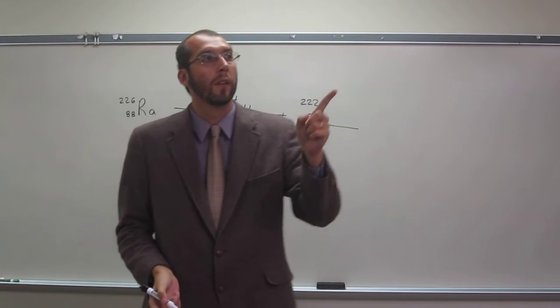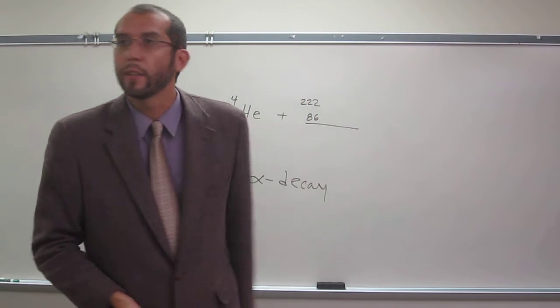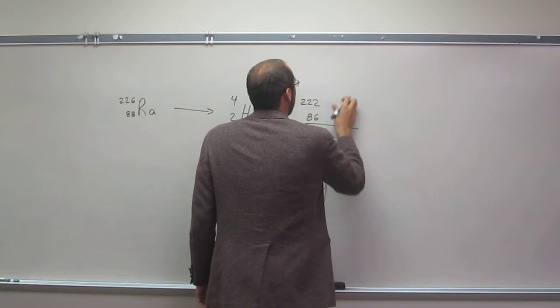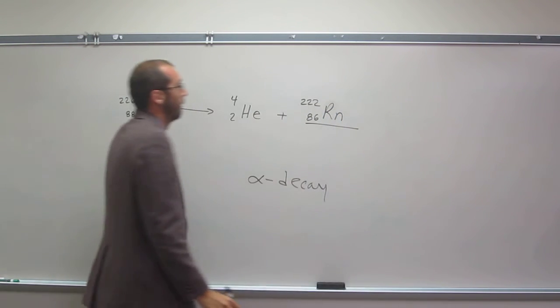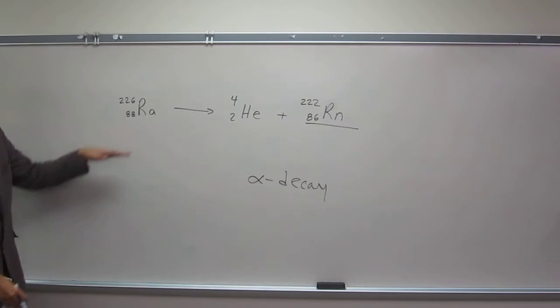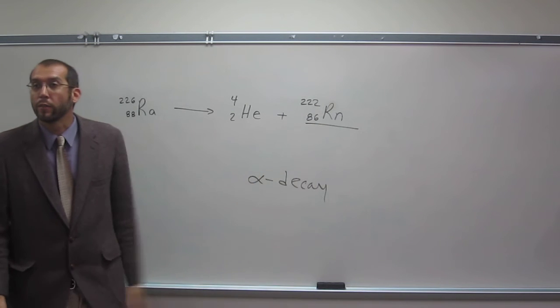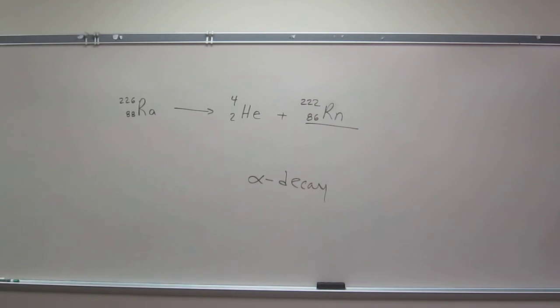And then if we look up there, we see radon is 86. So that is the chemical symbol. OK, so alpha decay of radium 226 gives us radon 222. Is everybody OK with saying that and thinking like that? Wonderful. Thank you.